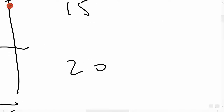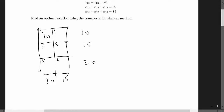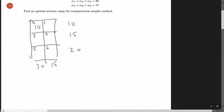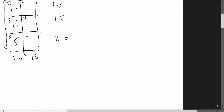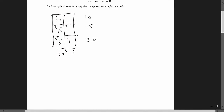Starting at the northwest corner, source one produces 10 units and destination one needs 30 units, so the minimum of those two is 10. That removes row one from consideration. Moving to row two, column one: source two produces 15 units and destination one still needs 20 units, so the minimum is 15. Continuing, I write a five here and 15 here.